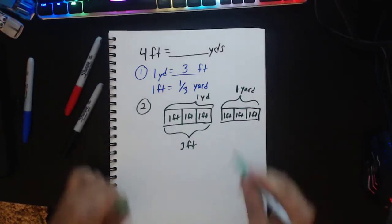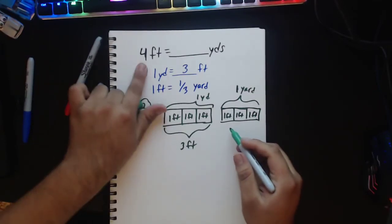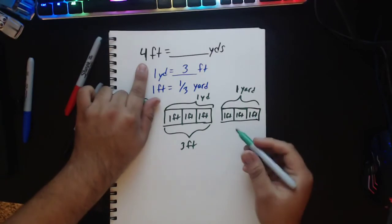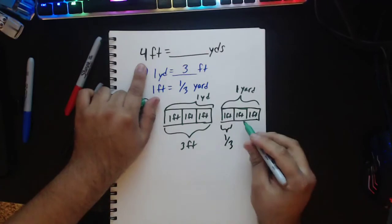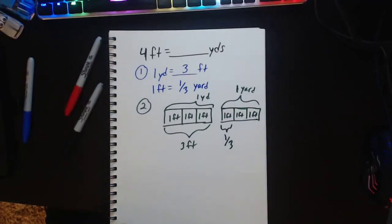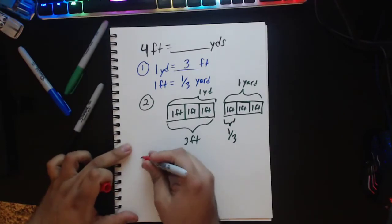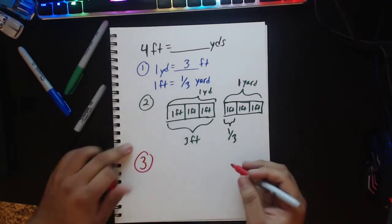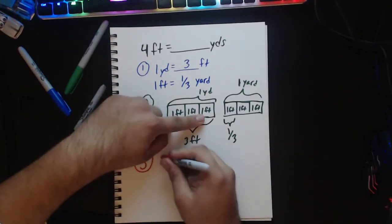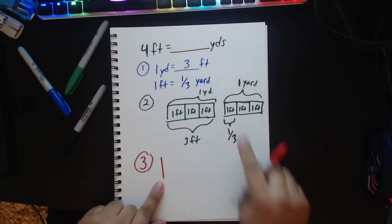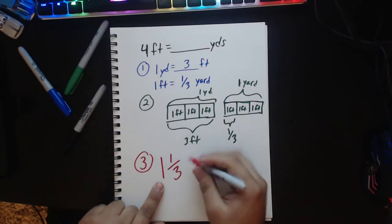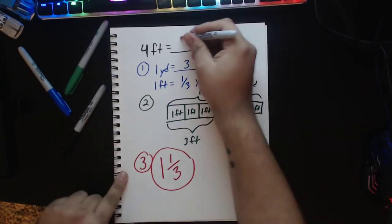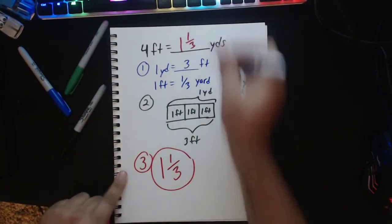But wait I have 3 feet, that must mean I have 1 foot left out of my 4 feet. So I have 1, 1 out of 3 of these. So my next step, my last step, my third step is writing down my answer. I have 1 whole and then I have 1 thirds of a yard. So my answer is 1 and 1 thirds.